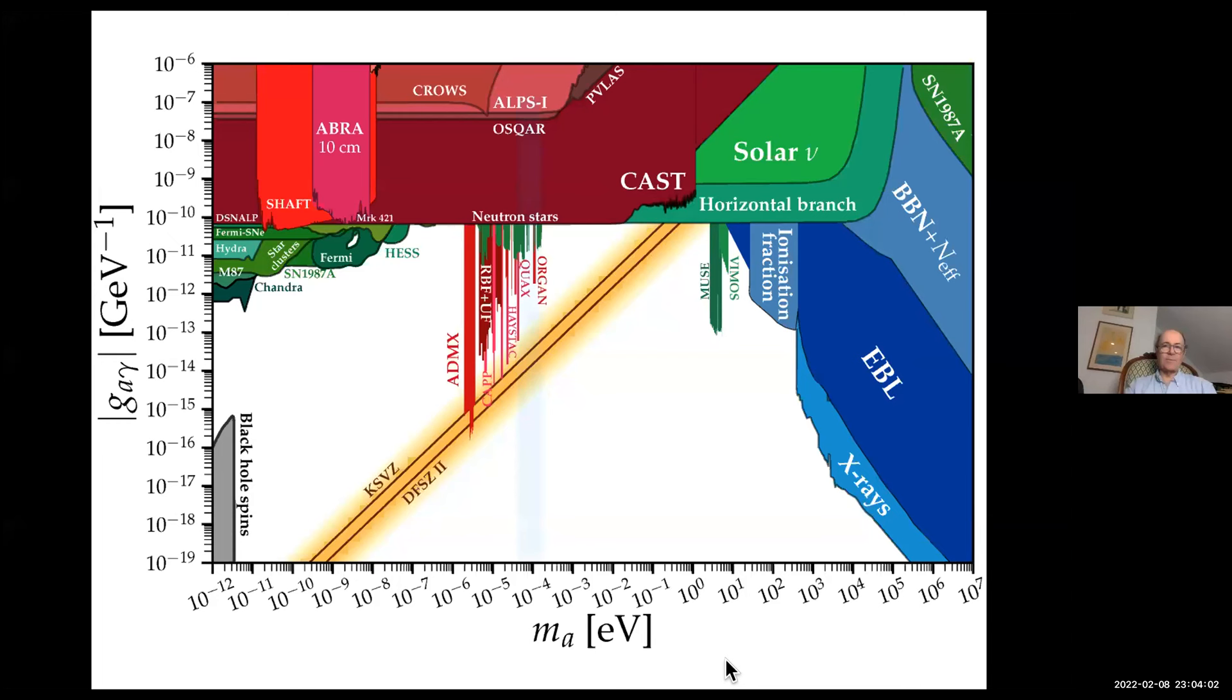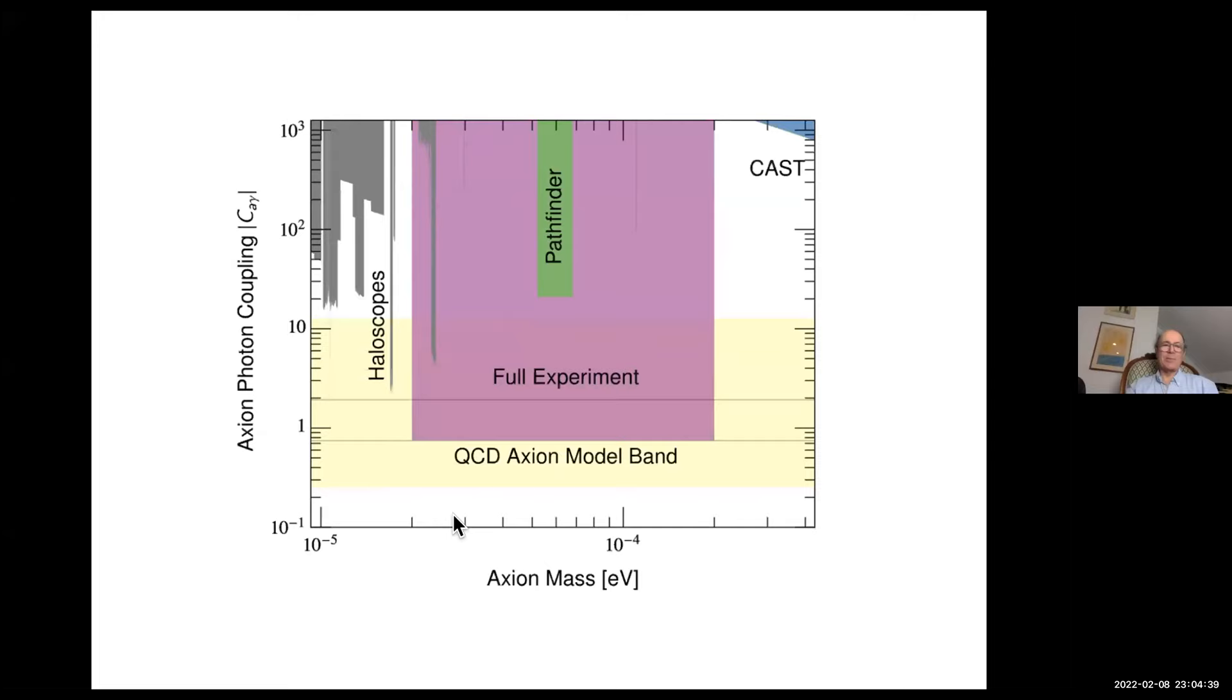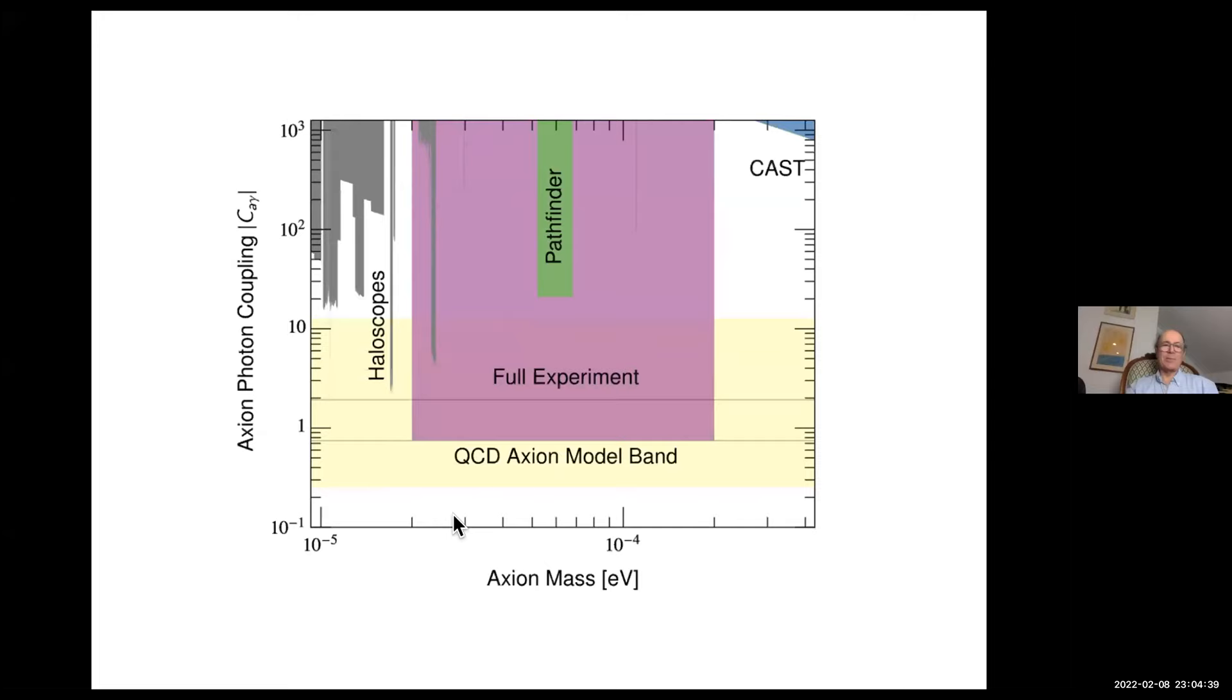You see that existing experiments are either too weak in terms of their detecting power or in the wrong place to actually home in on that prediction. But a plasma haloscope, this new idea, seems to do it very nicely. It fits the bill very nicely. Here's the sensitive range that you can make using things we've already prototyped. This is the theoretical range of predicted masses. So we have hope.